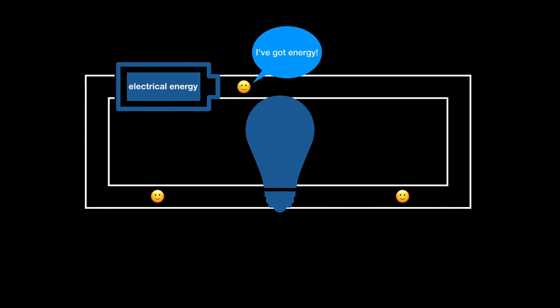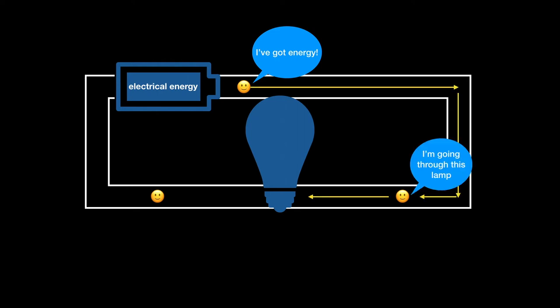The charge will use up some of this energy as it flows through the circuit, because the lamp presents a resistance to the charge's progress. When the charge pushes through, some of the electrical energy is converted to heat energy and light energy.